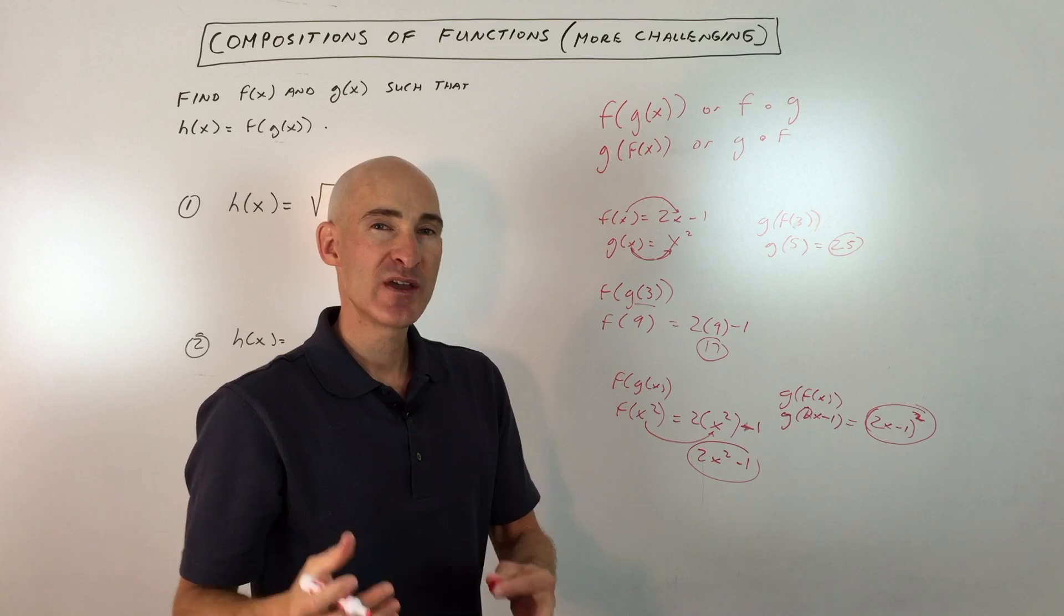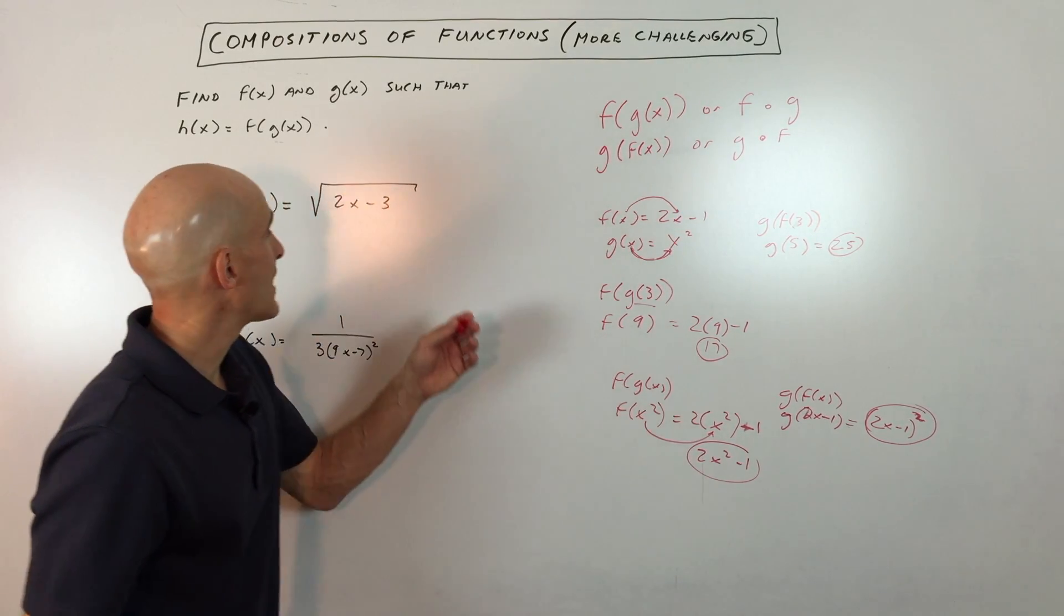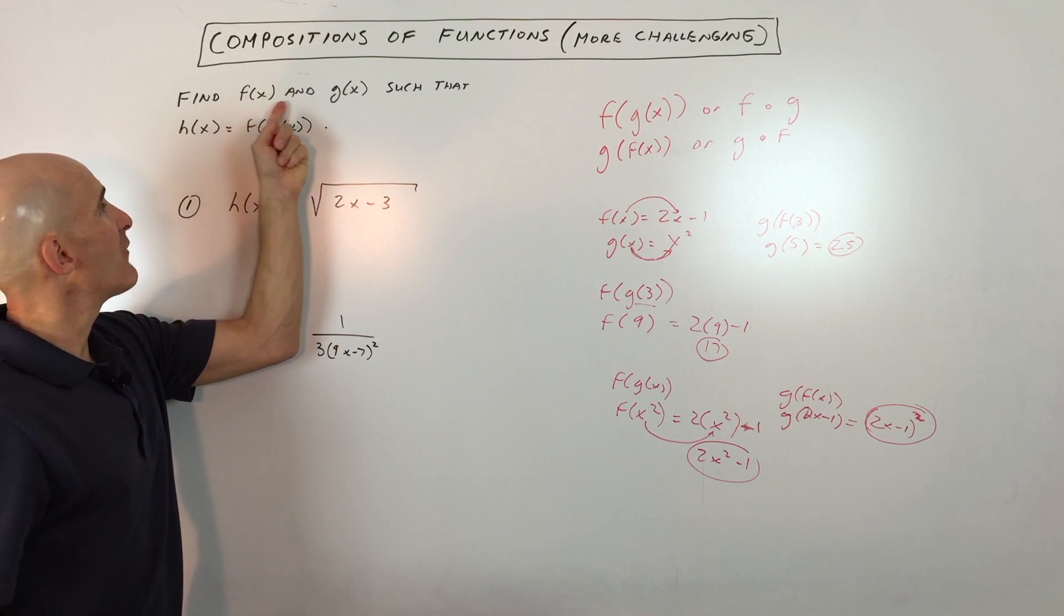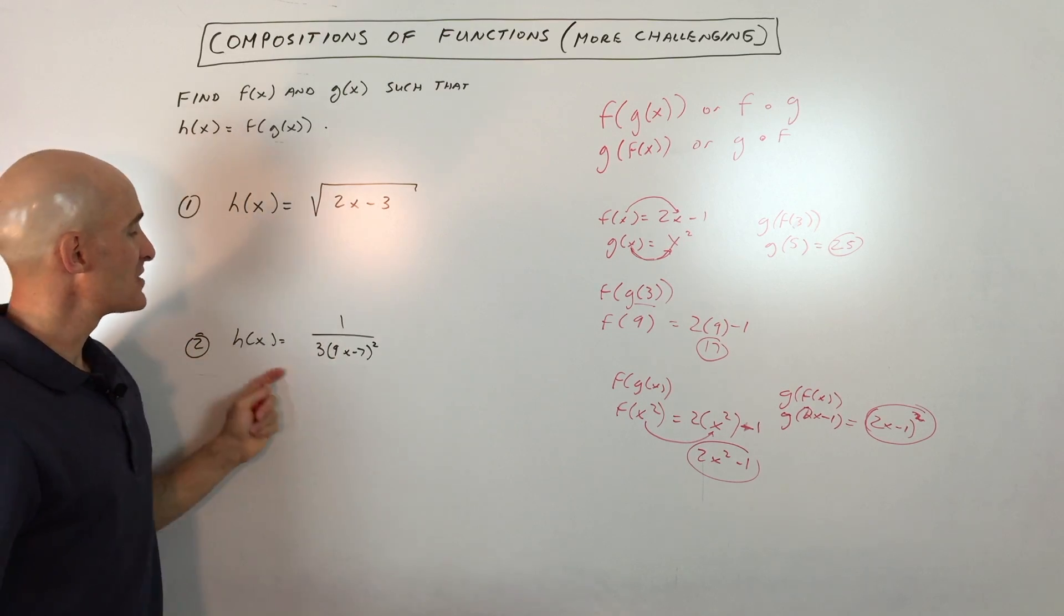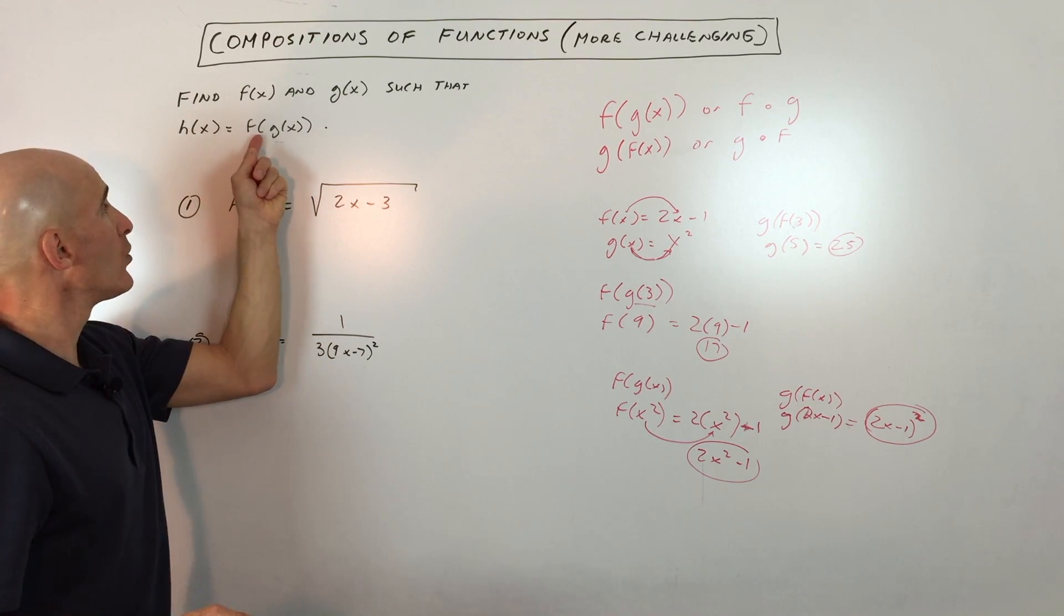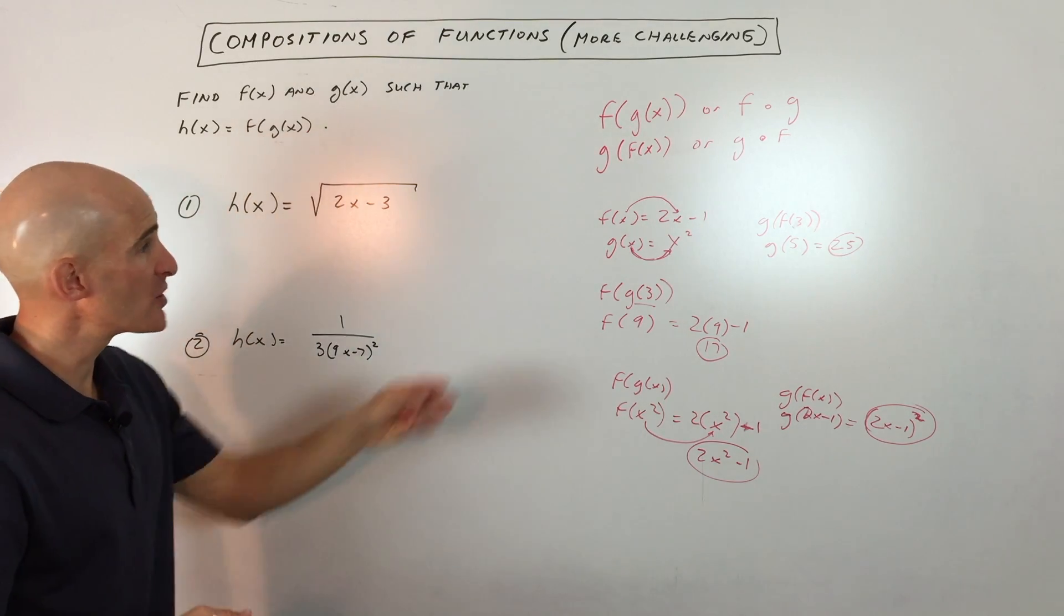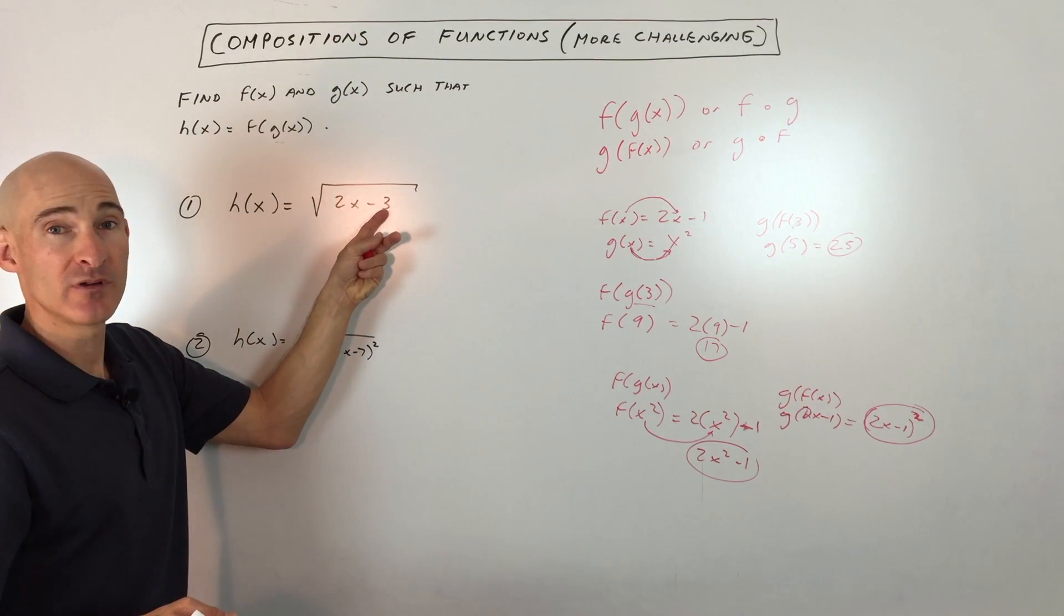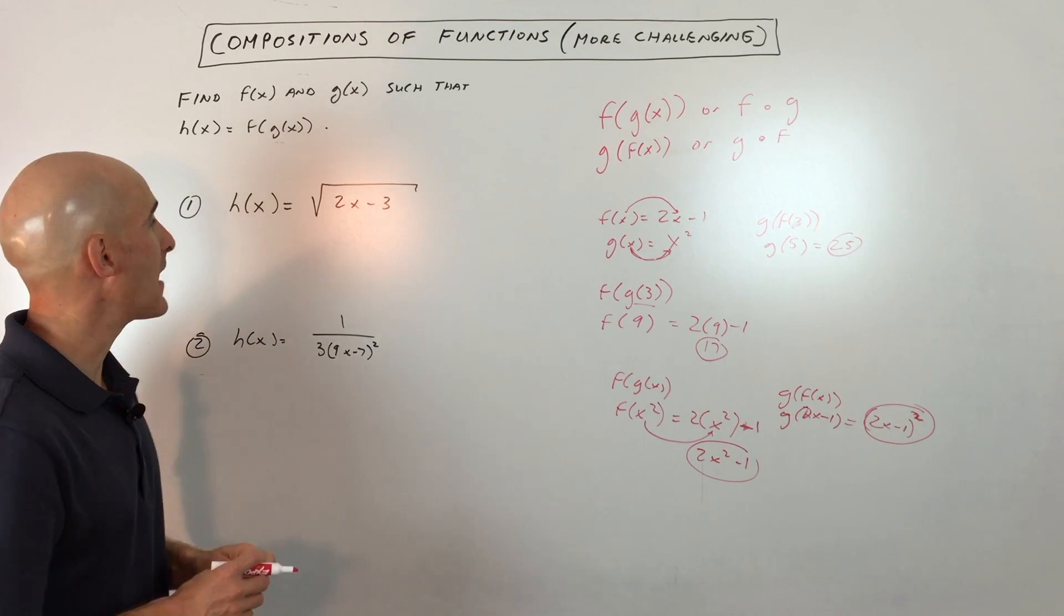Now a more challenging example: find f(x) and g(x) such that h(x) equals f(g(x)), the two functions composed together. We're coming up with our own two functions that when you compose them, you end up with this result h(x). There's more than one answer, so realize that.